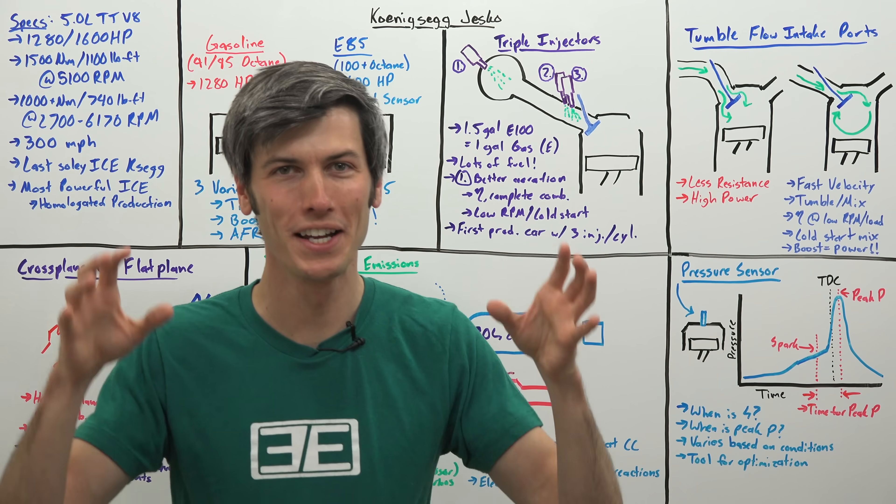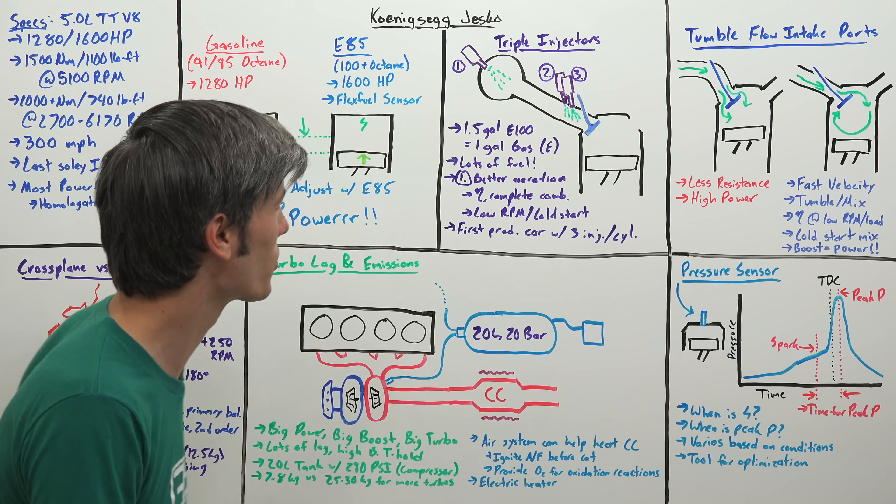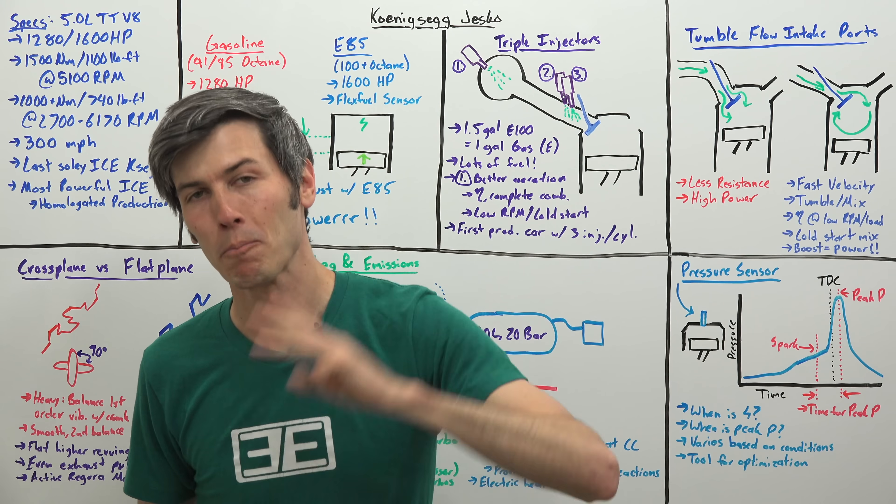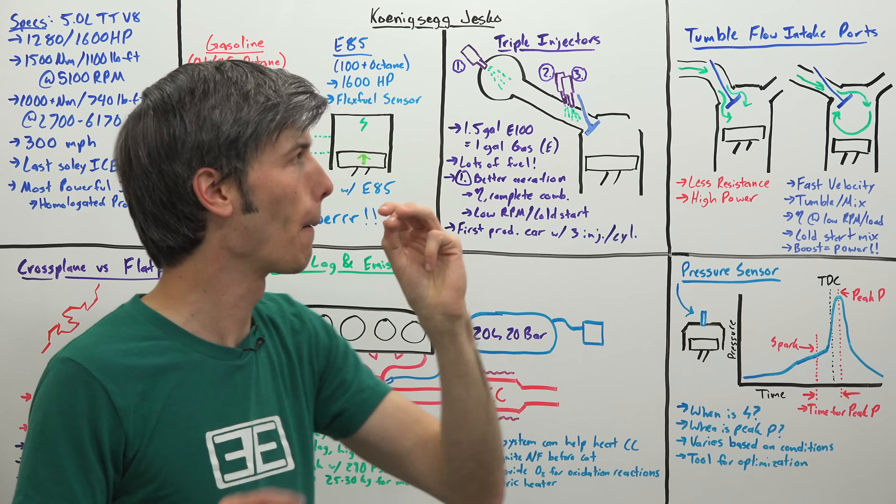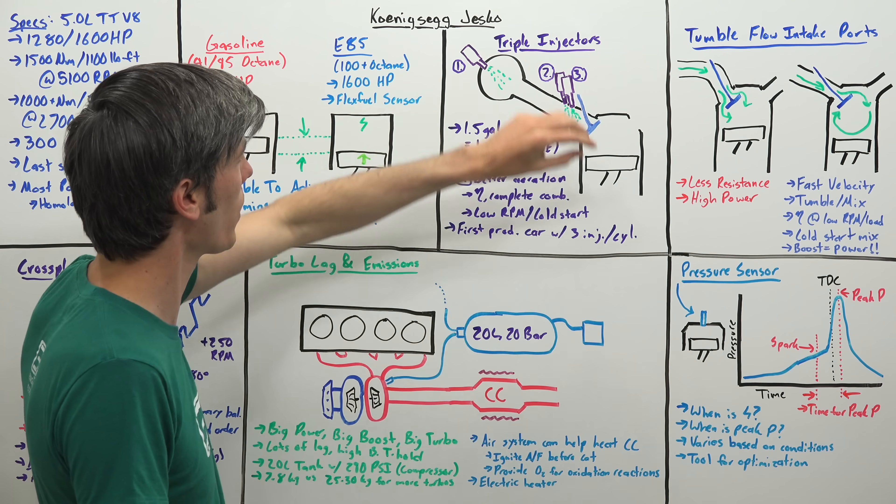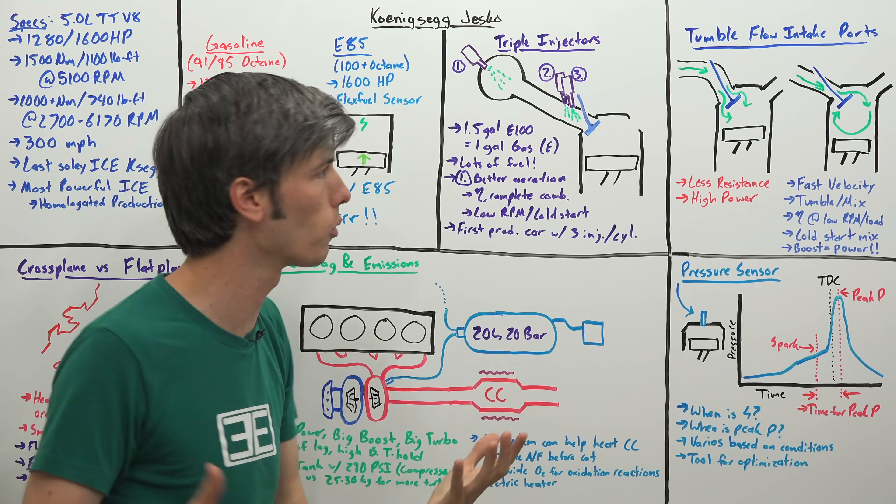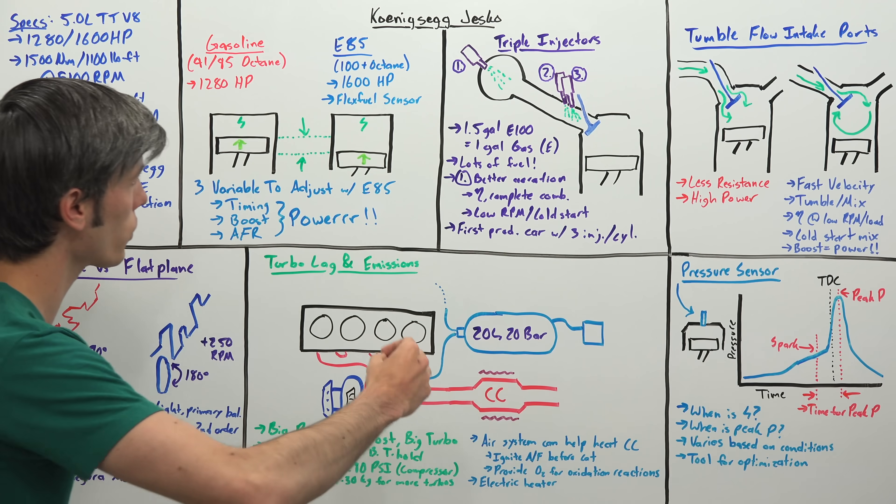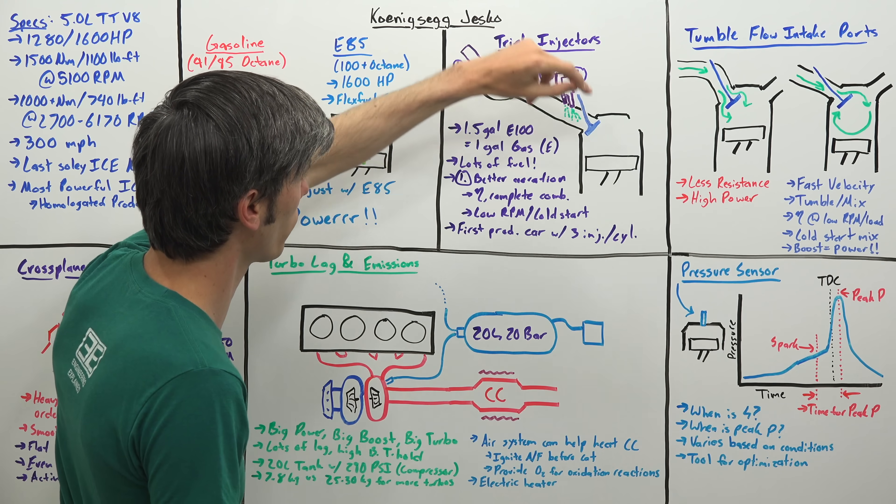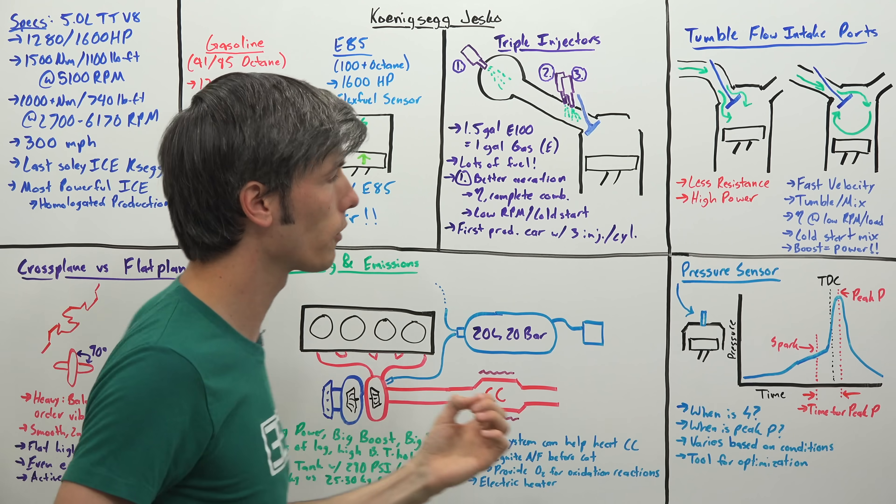If you're going to make 1600 horsepower, you're going to need a ton of fuel. The Koenigsegg Jesko is the first production car to have not one, not two, but three fuel injectors per cylinder. You have the two within the intake runner here mounted on a traditional fuel rail just like the Agera, and then you have an additional fuel injector added to the intake plenum before each runner for each individual cylinder.